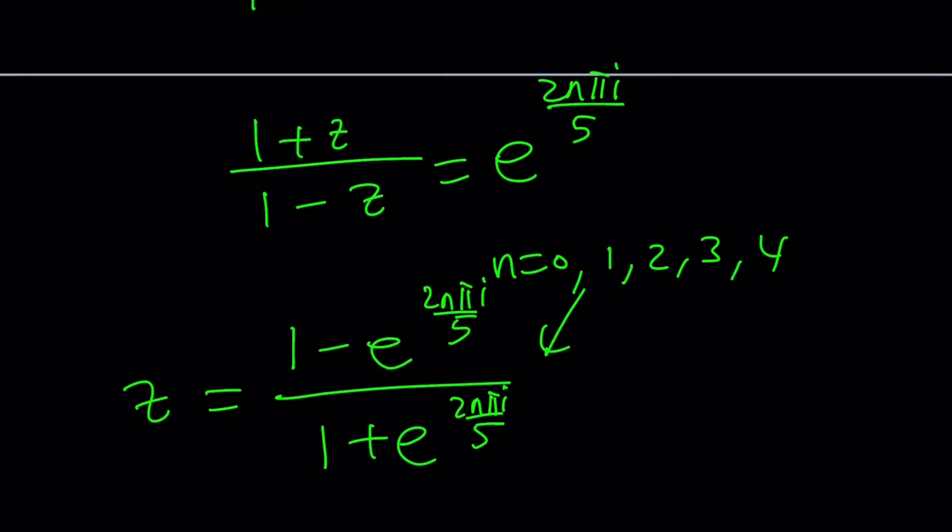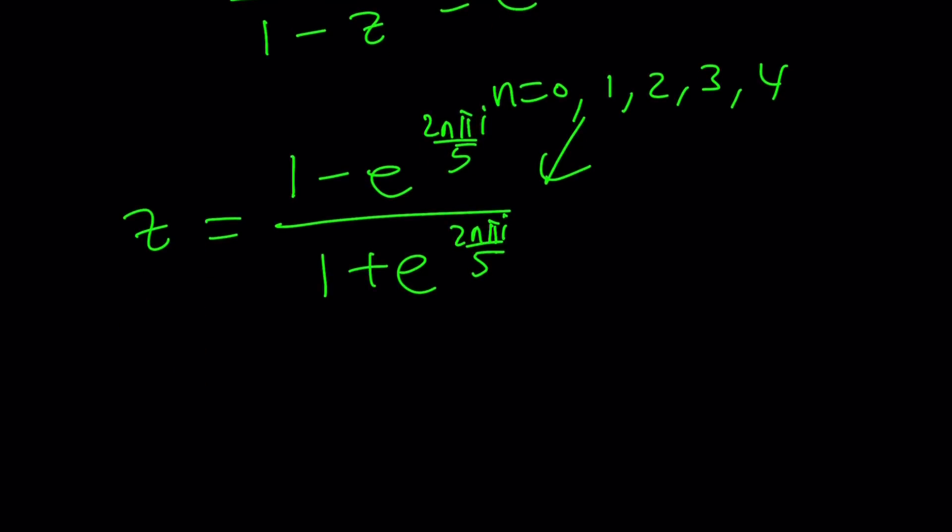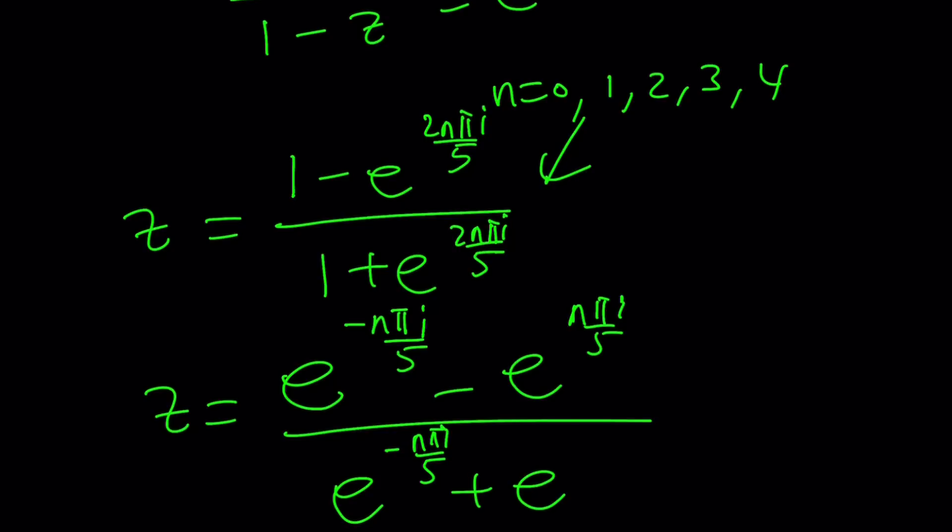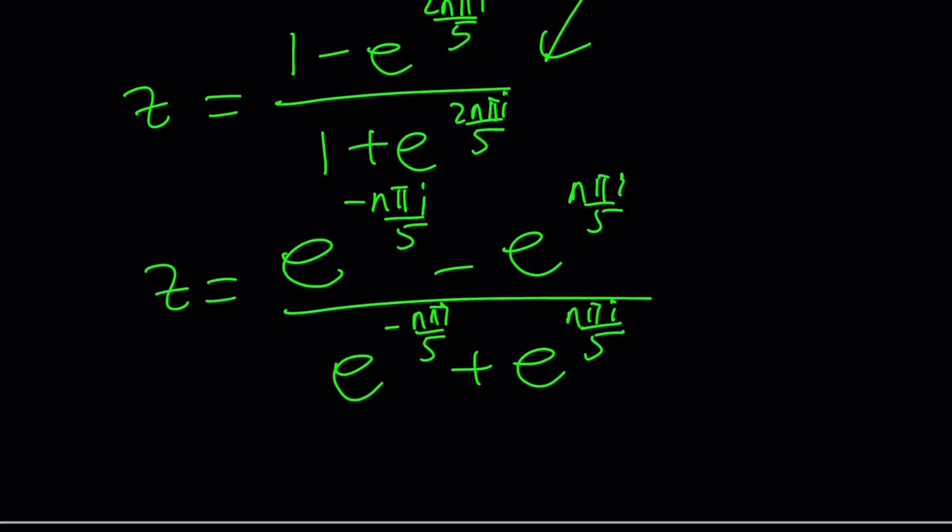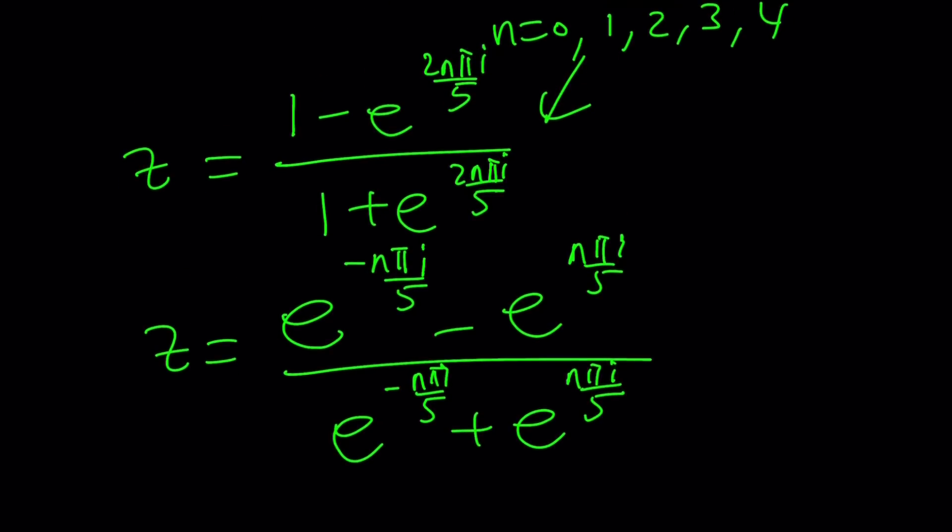z can also be written as (e^(-nπi/5) - e^(nπi/5))/(e^(-nπi/5) + e^(nπi/5)). Okay, you can kind of do a little division here and then get this. And of course, there's something good about it because these are kind of like sine and cosine expressions.